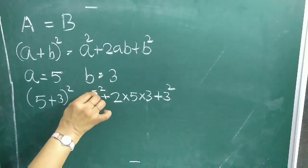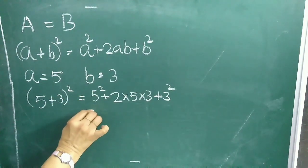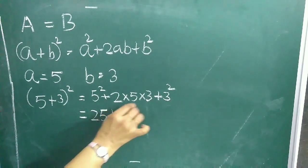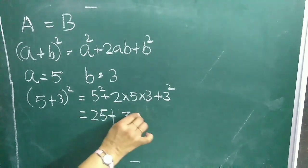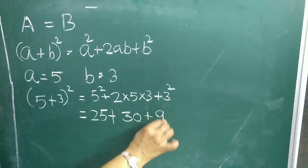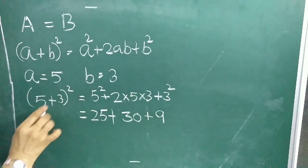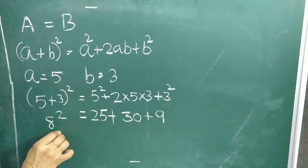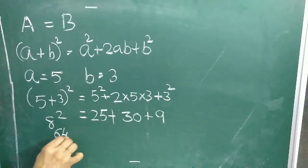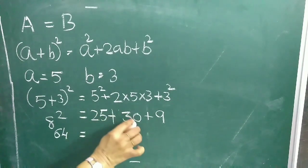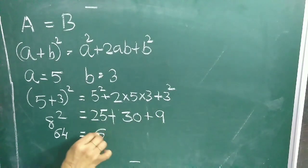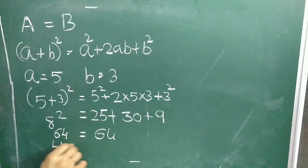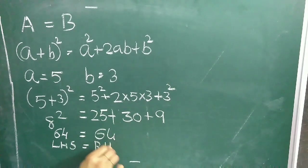That equals 25 + 30 + 9. And (5 + 3)² = 8² = 64. So 25 + 30 + 9 = 64. The LHS part is equal to the RHS part, which verifies the identity numerically.